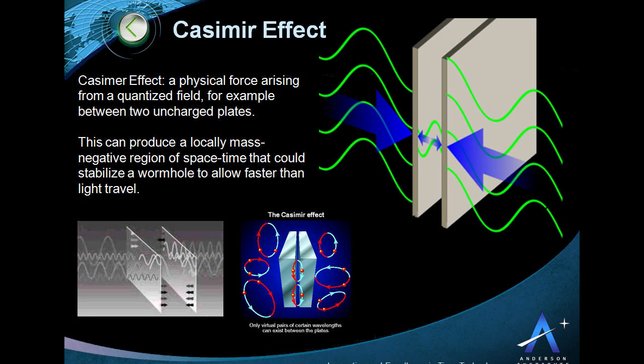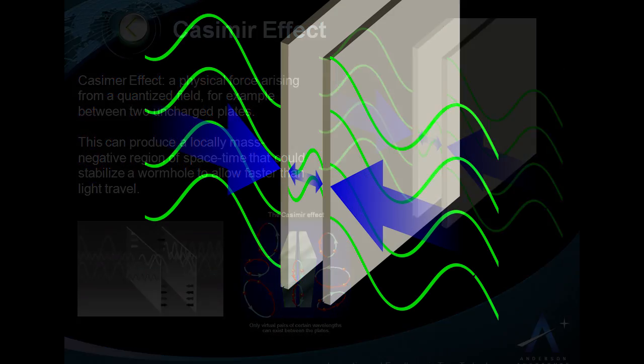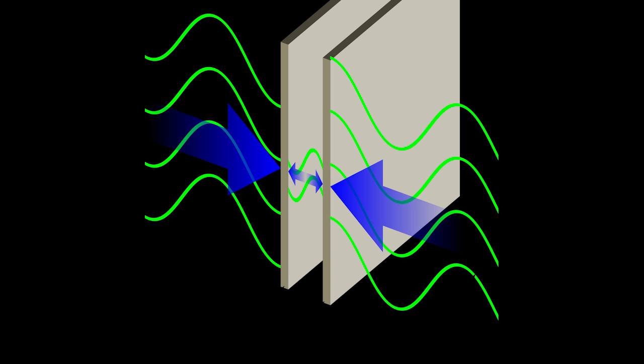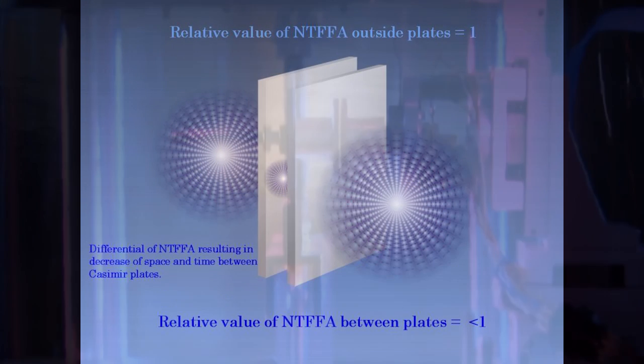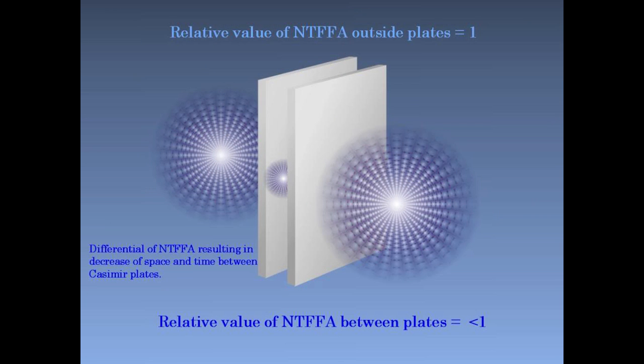As these plates get closer and closer to each other, the forces around the plates in free space, known as zero point energy, start to force them together. When the plates get extremely close, this force grows stronger and stronger and the forces outside are stronger than the forces between the plates. Or the negative energy between the plates is expanding space around them, which is known as the Casimir effect.